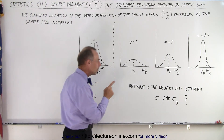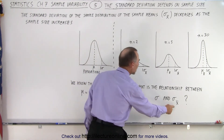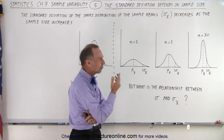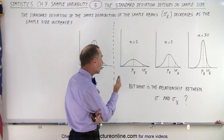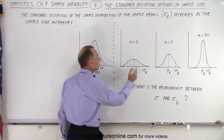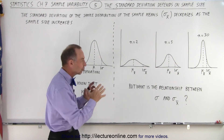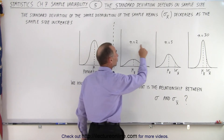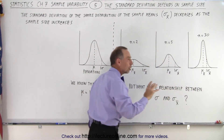But what is the relationship between the standard deviation of the population and the standard deviation of the distribution of the sample means? Notice that it's not the same, because for one particular standard deviation of the population we will have varying standard deviations when looking at the distribution of the sample means. We already know that as the sample size gets larger, the standard deviation gets smaller.